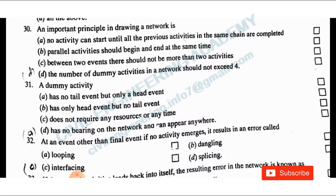Question 31: A dummy activity has no tail event but only a head event; or only a head event but no tail event; does not consume any resources or time; has no bearing on the network and can appear anywhere. A dummy activity does not require any resource or time — that is the answer.